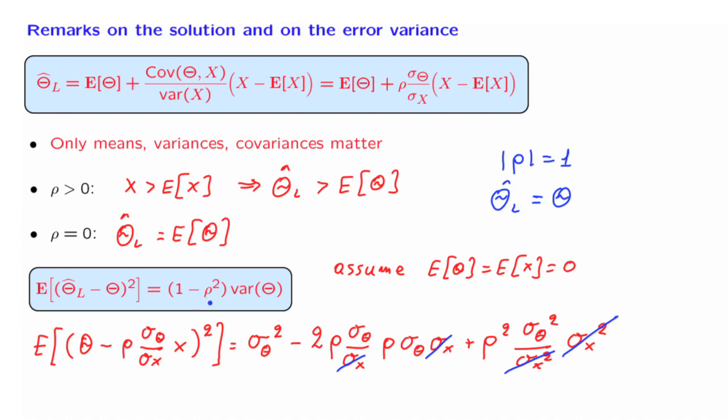So to summarize, the correlation coefficient plays a crucial role in linear least squares estimation. It determines the form of the estimator. And also, it determines how much the uncertainty in theta will be reduced through the process of estimation.